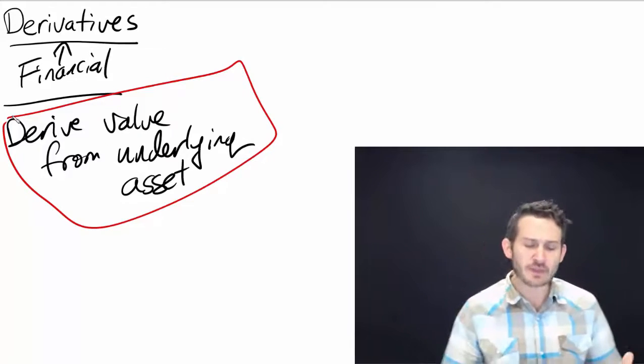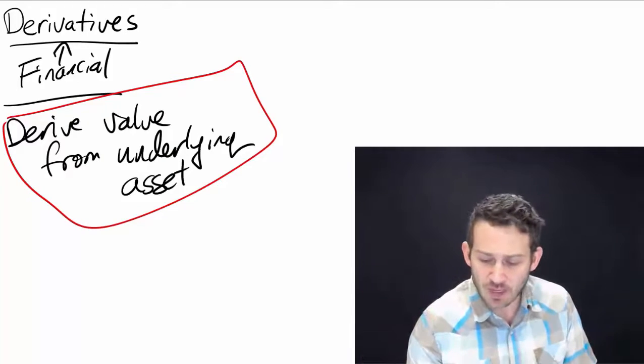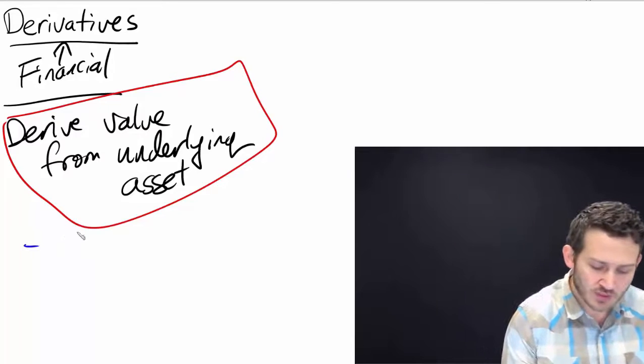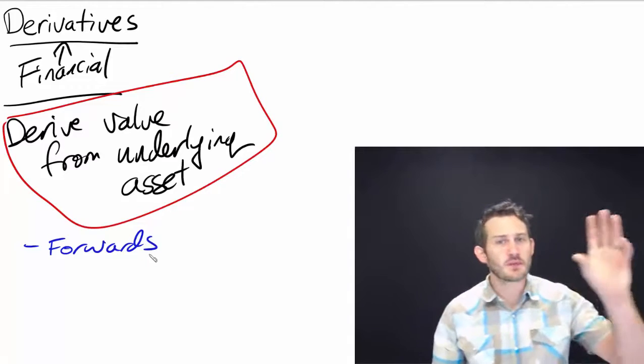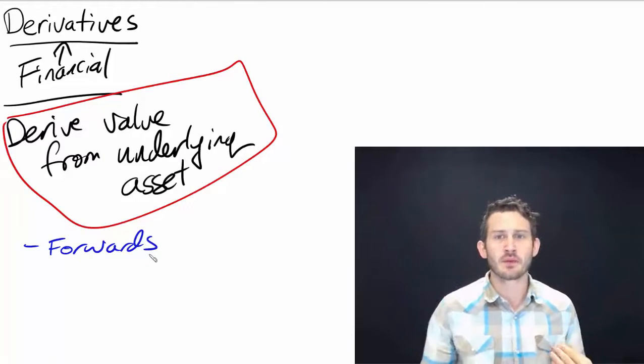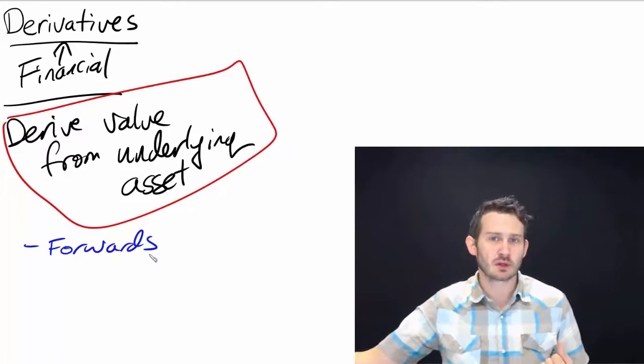So I'm introducing these derivatives and there's four different types that we're going to be talking about in depth. The first of which are going to be forwards. And forwards are basically we look into the future, and we enter into an agreement with someone else saying that we will make an exchange happen in the future.